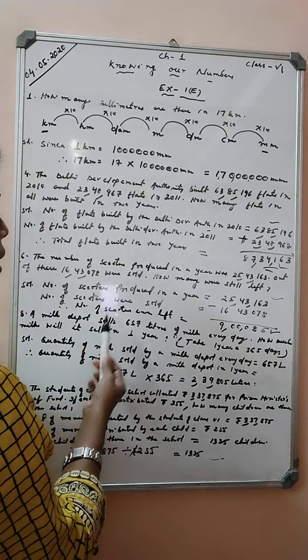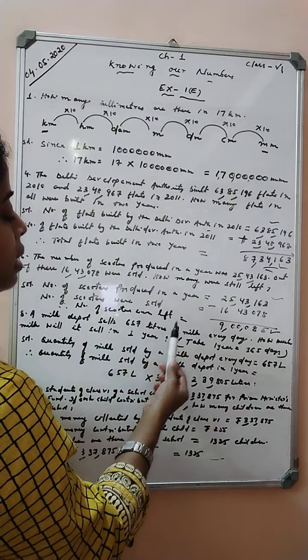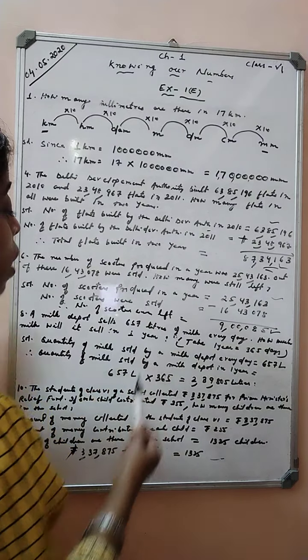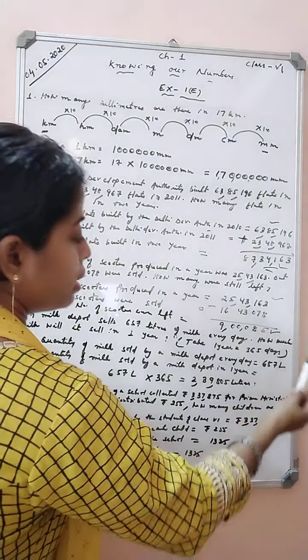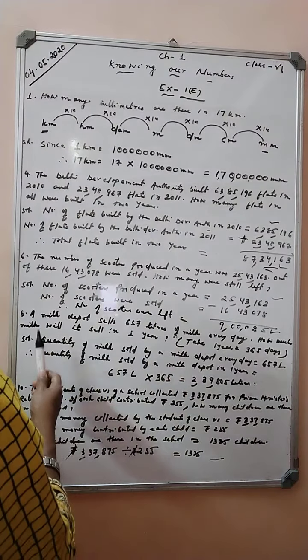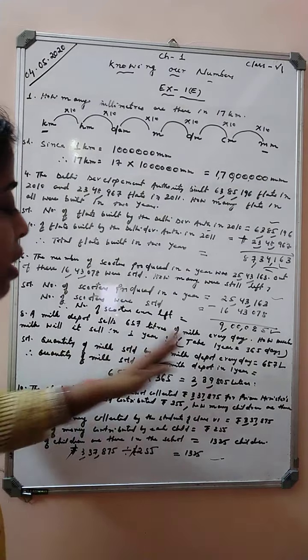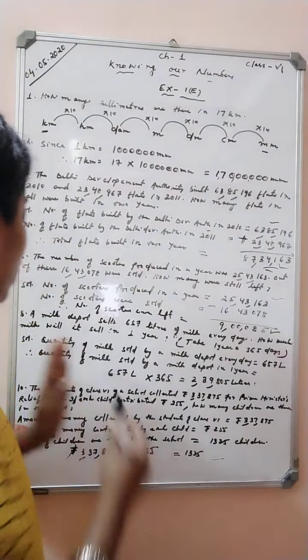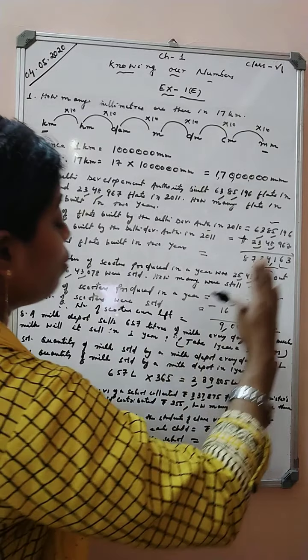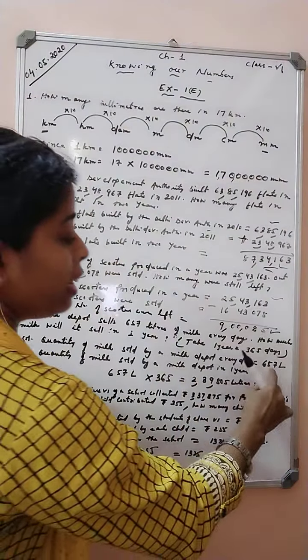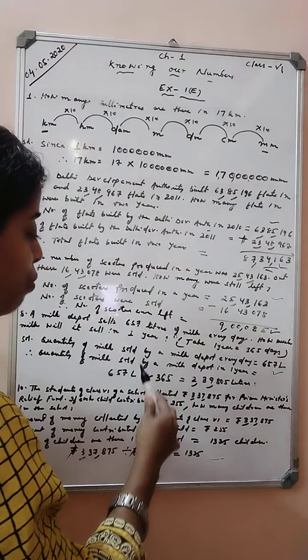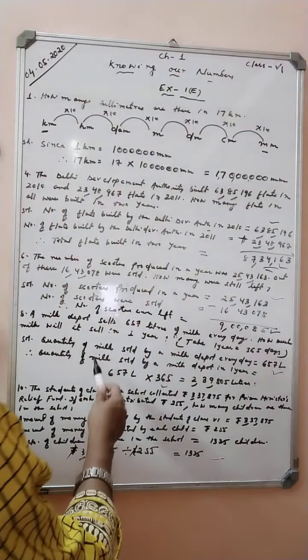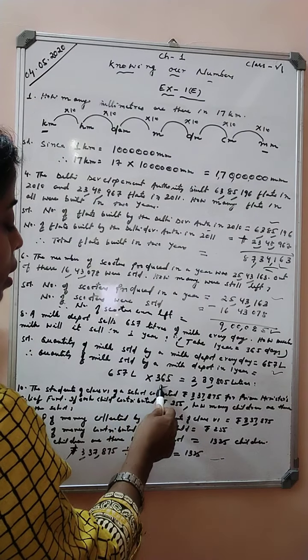A Milk Depot sells 657 liters of milk every day. How much milk will it sell in one year? Take one year equals 365 days. Quantity of milk sold every day is 657 liters. We have to find out the quantity sold in 365 days. 657 liters into 365.